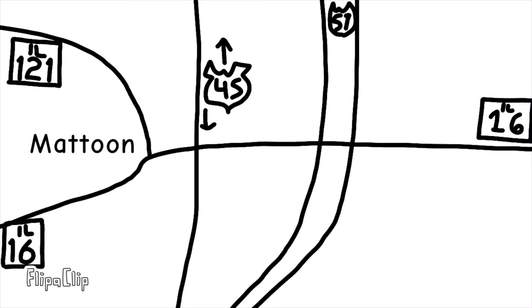Continuing even further southward, I-57 interchanges with Illinois Route 16 and barely misses Route 121 before intersecting U.S. 45 on the south side of Mattoon.